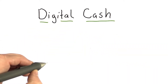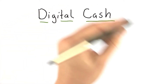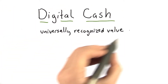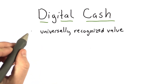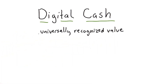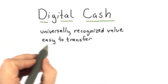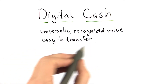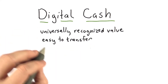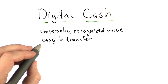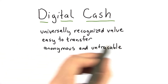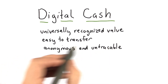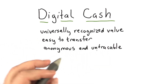So what are the properties that physical cash has — at least the properties we might want it to have? Well, it should have a universally recognized value, meaning everyone agrees that it's worth something. It should be easy to transfer between two individuals — you can transfer it without having to talk to a bank or some trusted third party. Some might argue against this, including some governments, but many individuals would like their cash to be anonymous and untraceable.